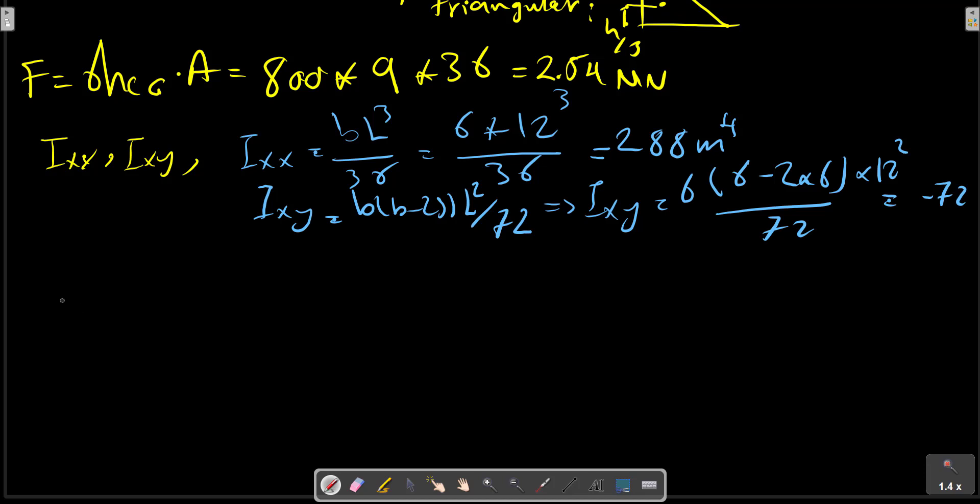For a rectangular triangular shape and any shape measured in the fluid, IXX of the shape is in the inertia formulas divided by HCG times A equals to, with calculation and replacement, YCP minus...